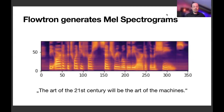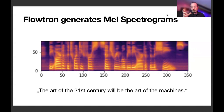One thing you need to know is there is a neural network called Flowtron, which is by NVIDIA. It generates mel spectrograms. A mel spectrogram is this picture you see here — it's a visual representation of any sound. It can be music, noise, or even vocals. This is a vocal representation of the sentence: 'The art of the 21st century will be the art of the machines.' The text itself was generated by a transformer, and the Flowtron model generated this mel spectrogram.